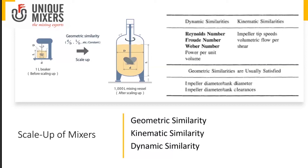The next is kinematic similarity. In case of kinematic similarity, the mixer's critical operating parameters — specifically the impeller tip speed, also called peripheral speed — must be maintained constant between lab scale and production scale. Tip speed is calculated as π·d·n, where d is the diameter of the impeller and n is the rotational speed. For dynamic similarity, the Reynolds number, the Froude number, and the power per unit volume need to be maintained. Dynamic similarity is only possible when you maintain geometric and kinematic similarities.